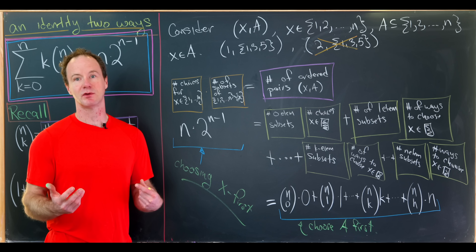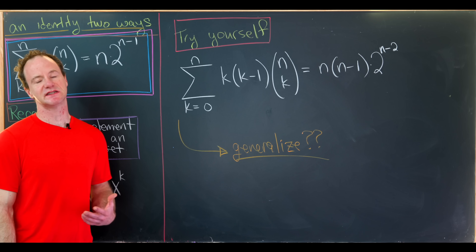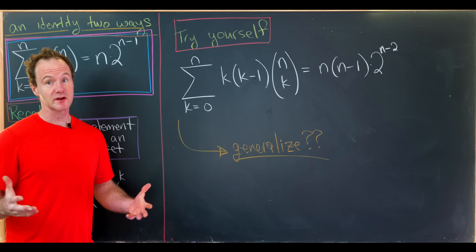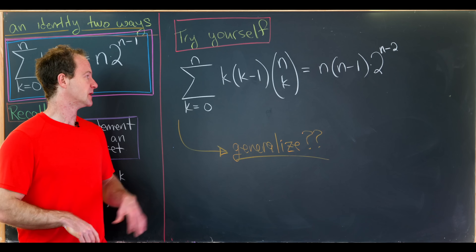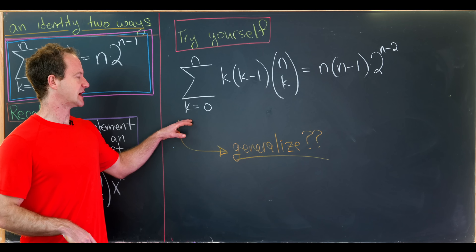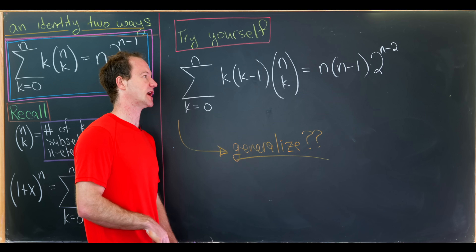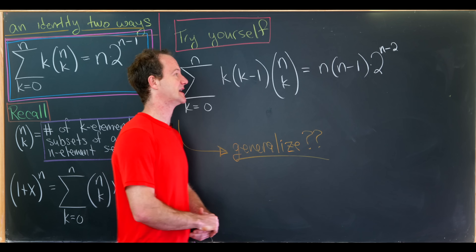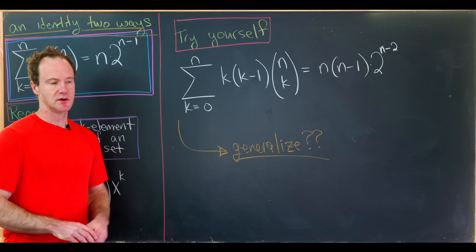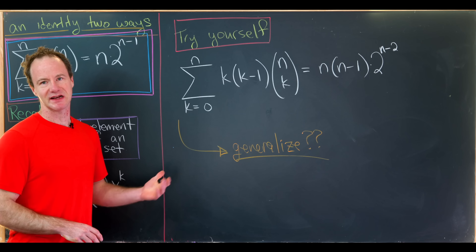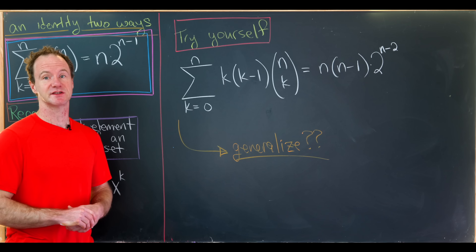I'll leave you with a similar identity as a homework exercise. If you're really enthusiastic, try to prove this two different ways, just like we did in the video: show that the sum as k goes from 0 to n of k times k minus 1 times n choose k is equal to n times n minus 1 times 2 to the n minus 2. That also begs the question: could we generalize this to something larger? Maybe that's another thing to try on your own. And that's a good place to stop.